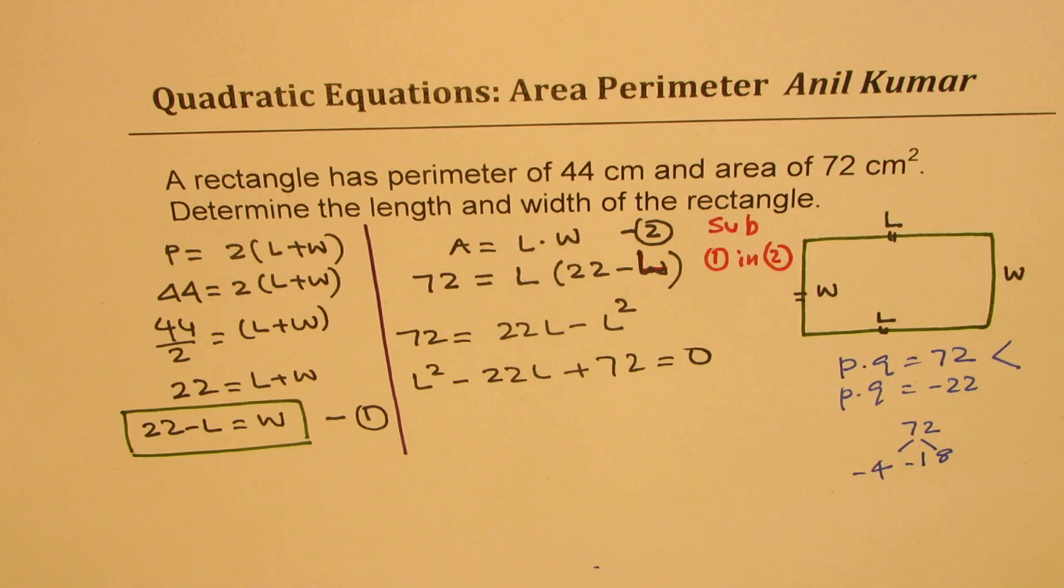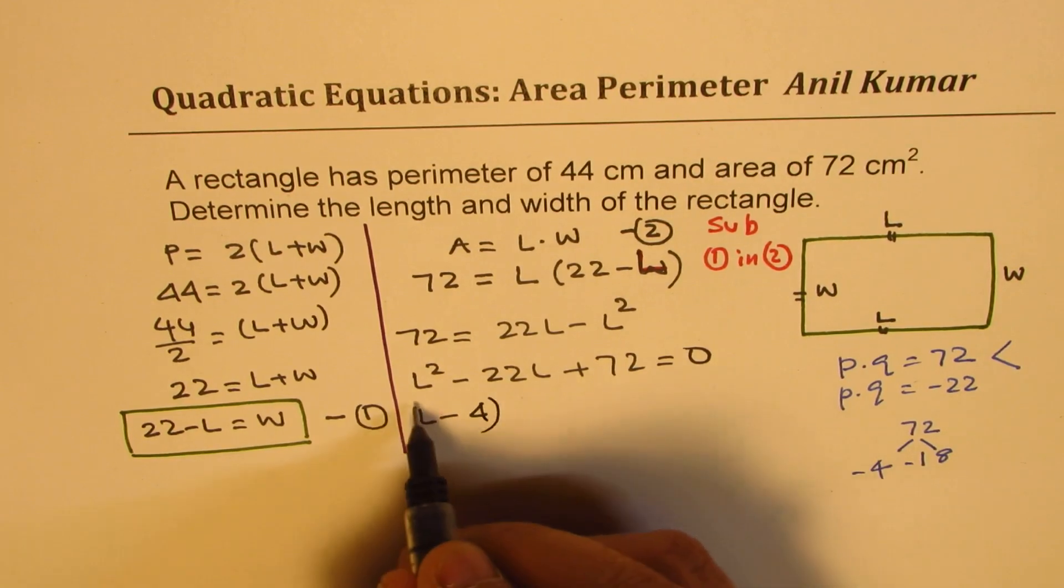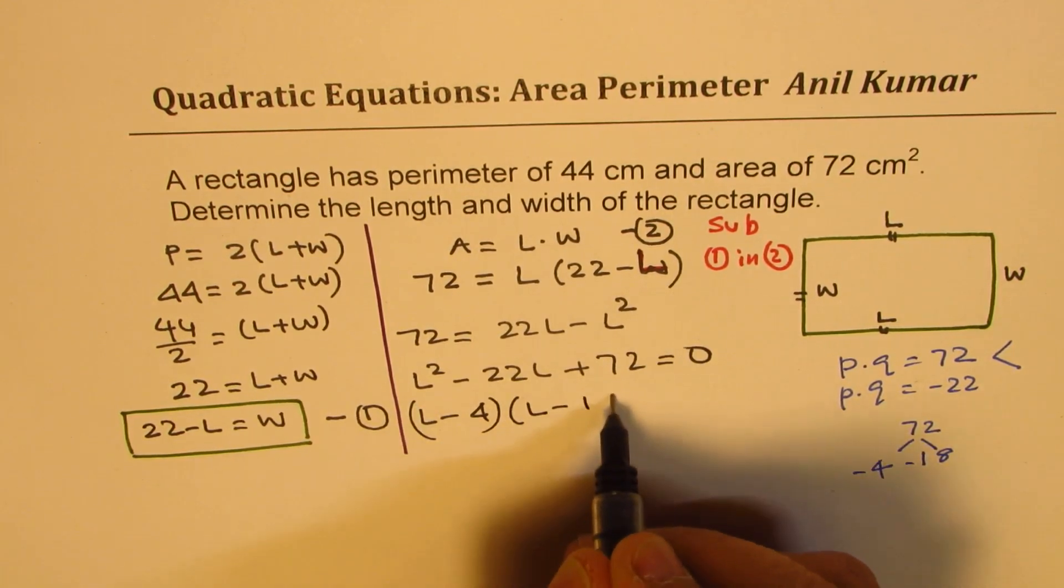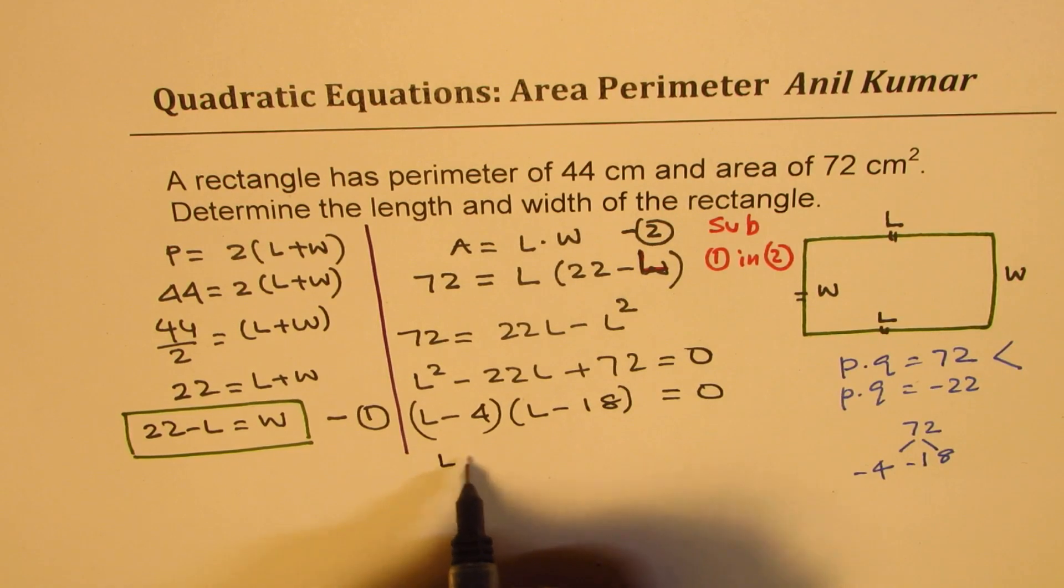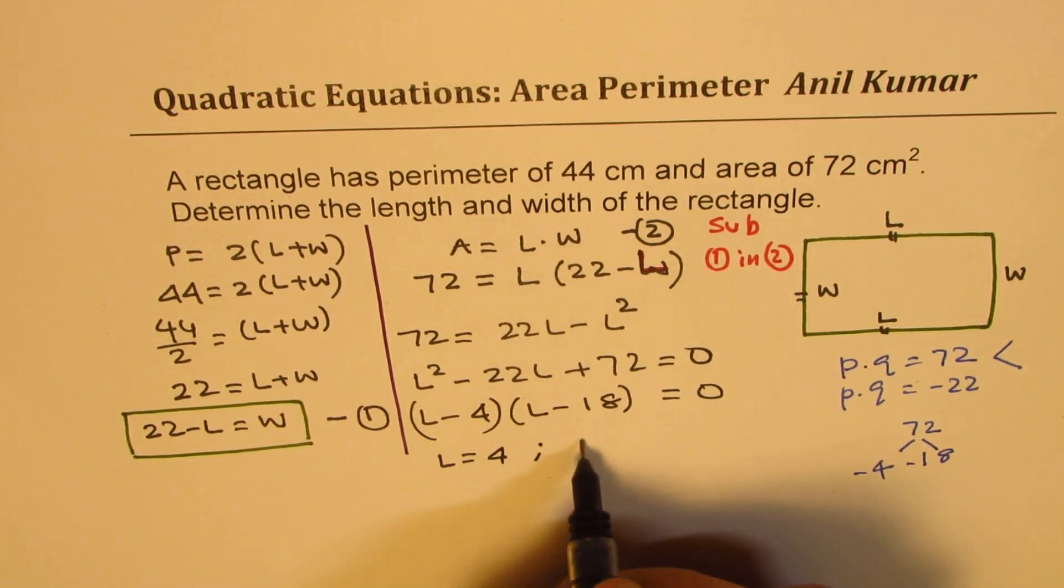So that is how you could factor. We have two numbers here, so we can now write this as (L minus 4) times (L minus 18) equals 0. So that gives you two solutions: L equals 4 or L equals 18.